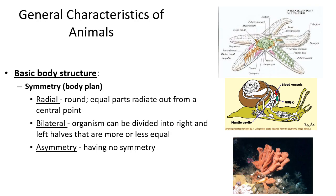One of the ways you can classify organisms is by their body structure. One of the body structures we use to categorize animals is their symmetry — how they can be split into equal halves — and that relates to their body plan. You can have a radial, circular body plan like a jellyfish or a coral polyp, where you can split it in many different ways and still have equal halves.